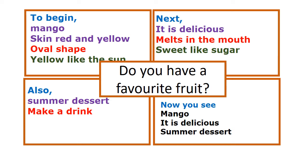Before we go and write our paragraph, let's recap. Remember, we write our topic sentence, then we write supporting detailed sentences. We use figurative language and we use transitional words. Do you have all of those in your writing? If you said yes, we can begin writing. Let's look at our paragraph.